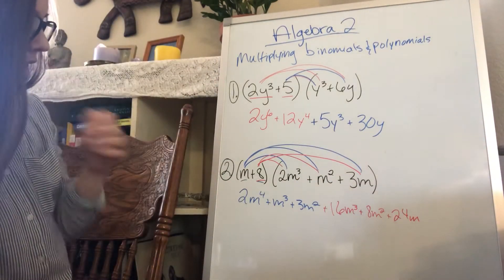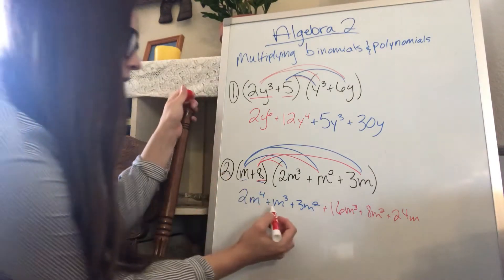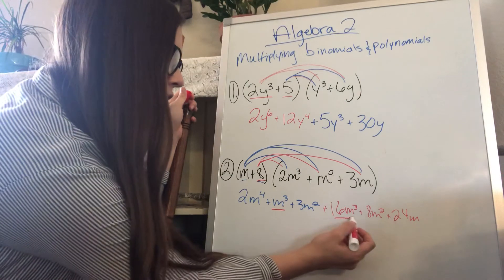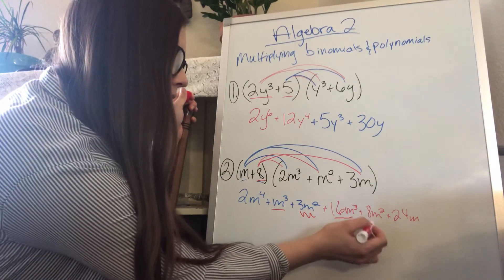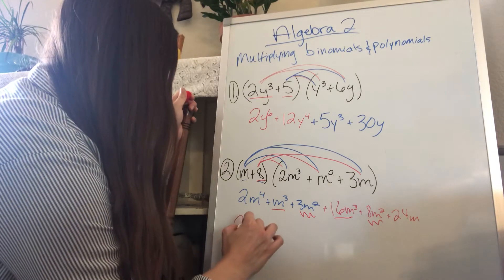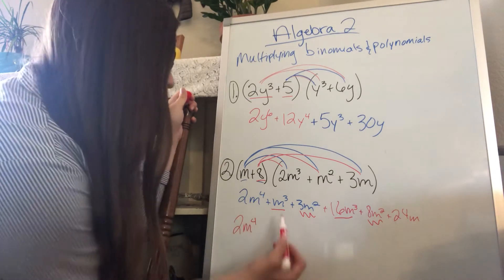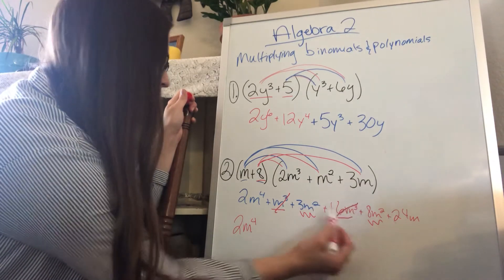And then here, we do have some terms that we can combine. I've got an m cubed here and an m cubed there. I've got an m squared here and m squared there. So I'll bring down my 2m to the 4th because I don't have anything I can combine with that. My m cubed and my 16m cubed become 17m cubed.